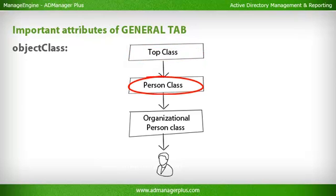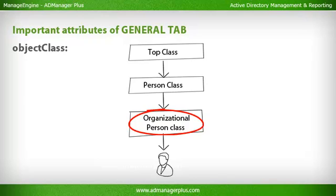Person Class contains the personal information of the users. Organizational Person Class contains organizational information about the users, like employee number, department, designation, email, etc.